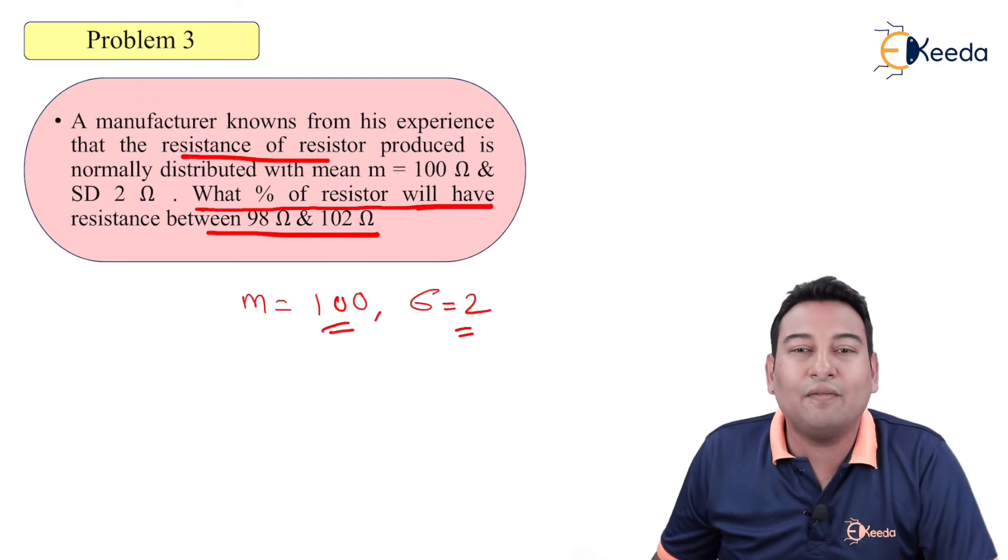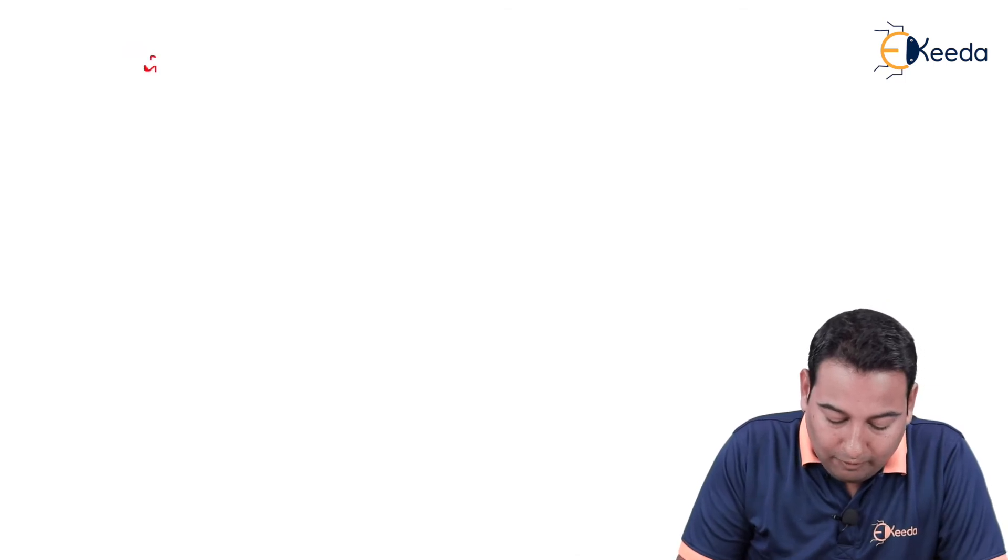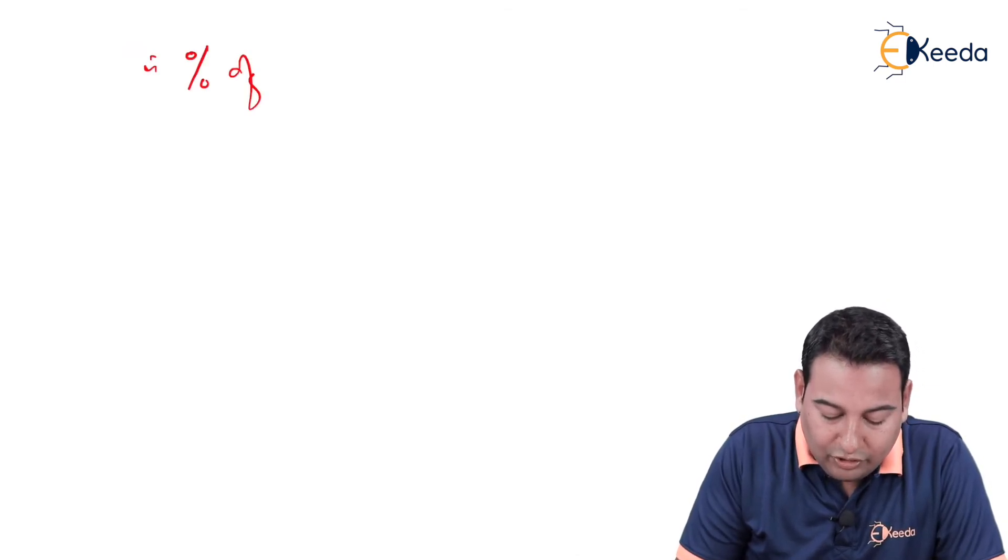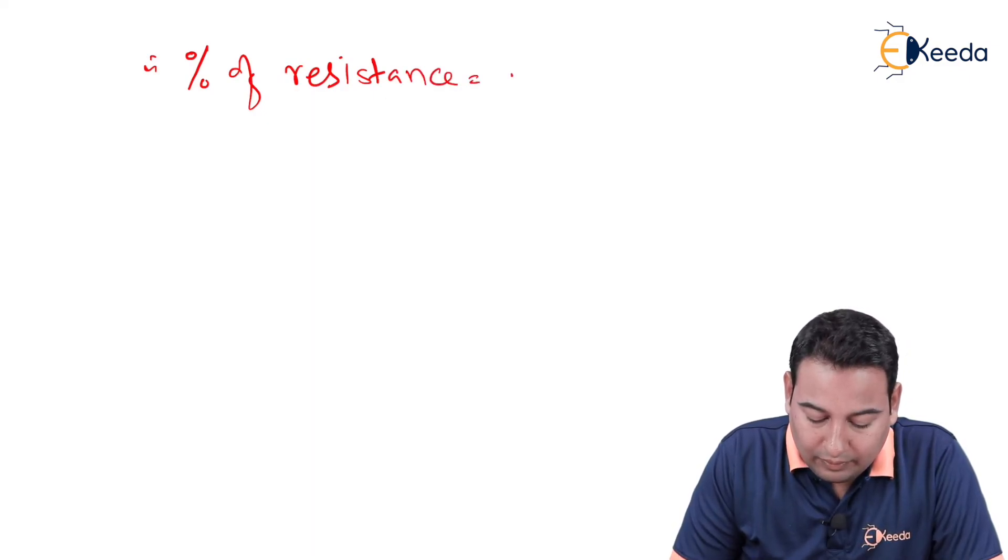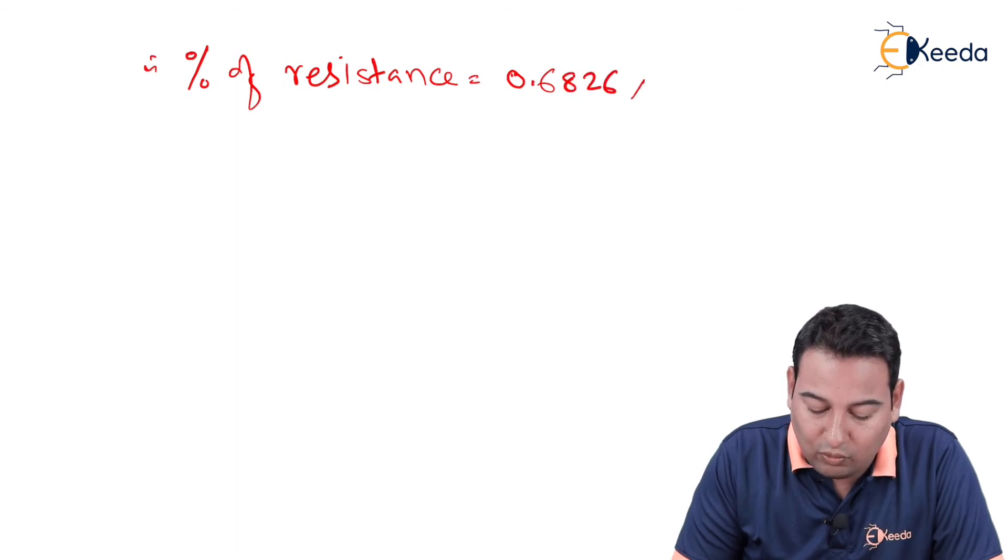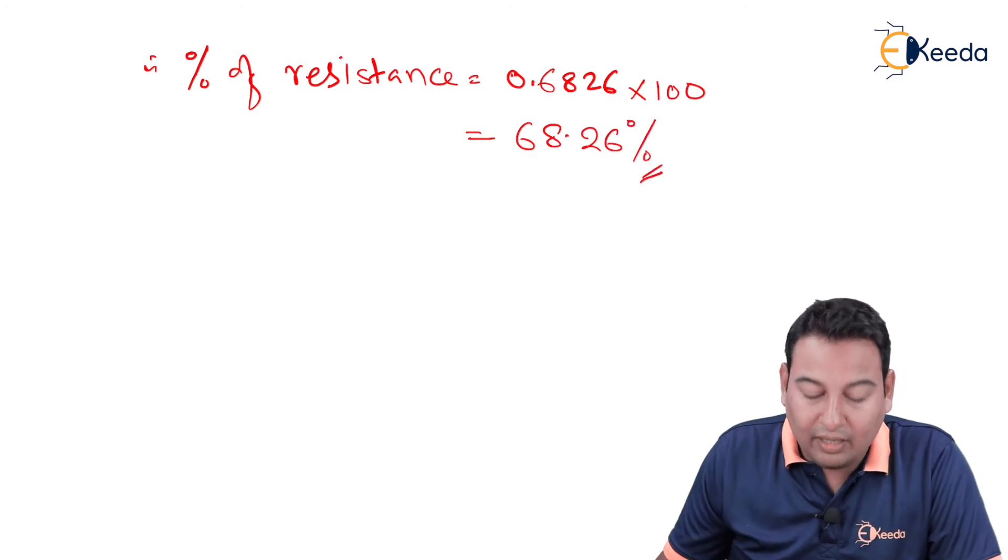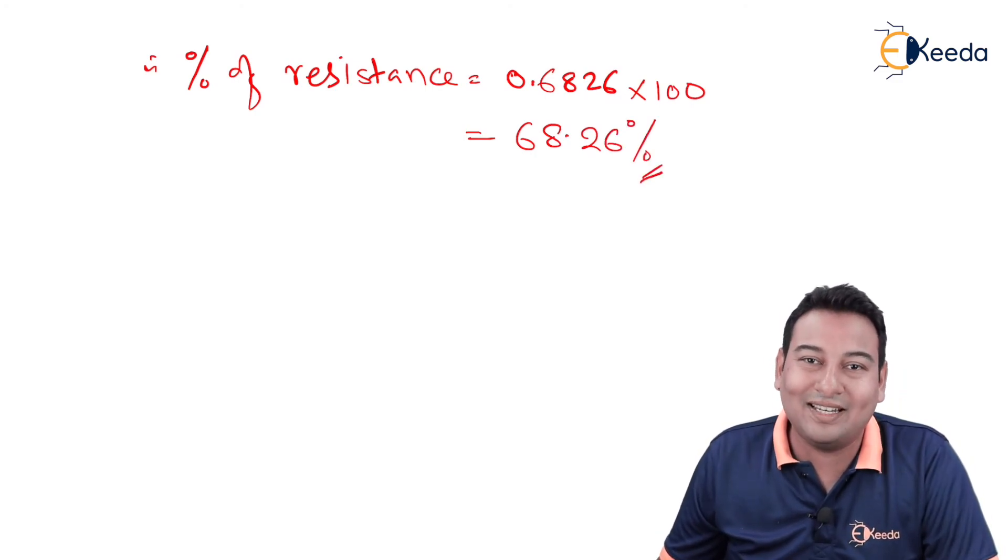Percentage is asked, therefore we need to multiply the answer with 100. Therefore, percentage of resistance is equal to 0.6826 into 100, which is equal to 68.26 percent. We are done with the problem. Hope you understood. In the next videos we will discuss few more examples. Thank you.